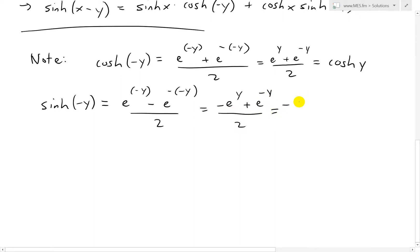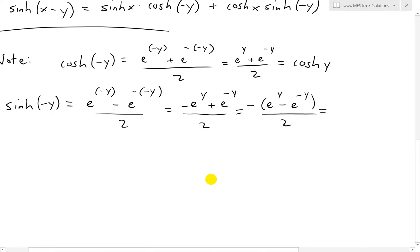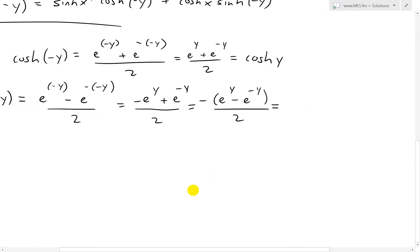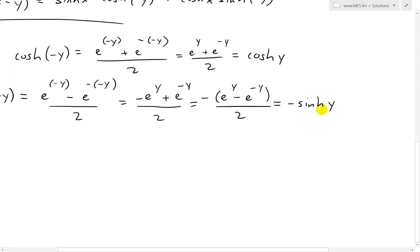Take out the negative. We get negative e to the y minus e to the negative y over 2. This just equals to recall definition. This is the same thing as cosh. So notice here for sinh, but we have a minus y. So thus what we have is this is the same thing as this one, but we have a negative there. And this is for y instead of negative y. So we have, this is going to be equal to negative sinh of y. So sinh negative y equals negative sinh y.